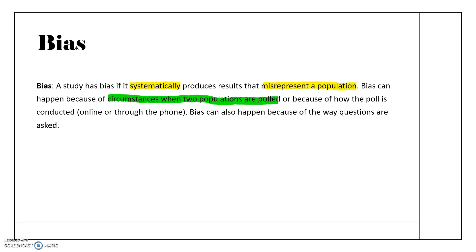Bias can happen because of circumstances — like polling on a beautiful day versus a rainy day — or because of how the poll is conducted, such as online, by phone, or in person. Bias can also happen because of the way the questions are asked. For example, asking 'Aren't you concerned about gun violence?' introduces bias because people might start thinking they are concerned just because of how the question is phrased.